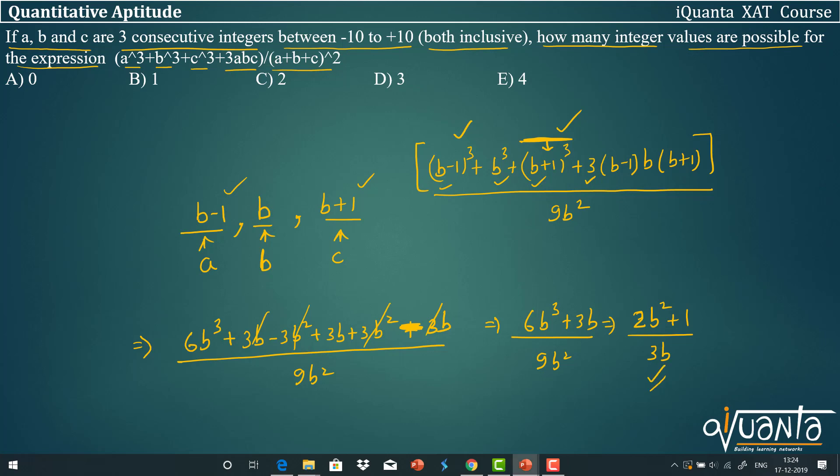So we have a final expression in B. We know that value of B will lie from -10 to 10. So now you have to put all values of B in this expression from -10 to 10.